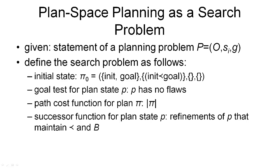Here's a quick recap of the search problem as we've defined it so far. We are given the statement of a planning problem consisting of a set of operators, an initial state, and a goal condition. Then we need to define a search problem, which consists of an initial state. Our initial state was the empty plan, which isn't quite empty — it consists of the init action and the goal action. These were the two dummy actions we've introduced to encode our initial state and the goal condition into the plan. And then we have one ordering constraint, namely that the init dummy action must come before the goal dummy action.